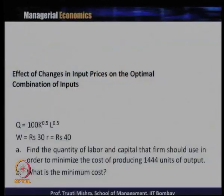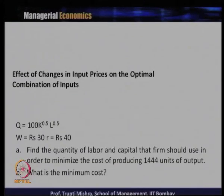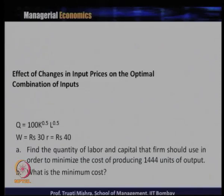Next, we will determine numerically how the input combination changes. Given the production function Q = 100 K^0.5 L^0.5 (a Cobb-Douglas form), where W = 30 (price of labor) and R = 40 (price of capital), we need to find the quantity of labor and capital that minimizes the cost of producing 144 units of output.